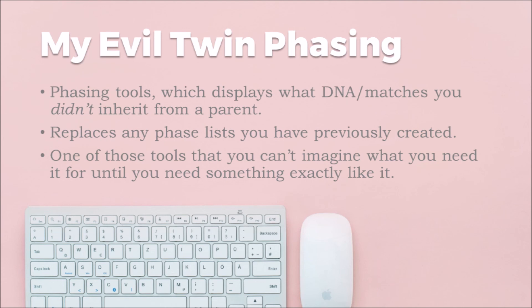Not every tool is for every person, and you won't understand what a tool is for until you need exactly what it offers. The regular phasing tool — comparing my kit to my mother's kit and pulling out matches related to both of us — is perfectly sufficient for me. The evil twin phasing is an oddly specific type of phasing that displays the DNA and matches you did not inherit from your parents. And because running it replaces the phase list you've already created, I'm not going to lose that work just to run this tool.